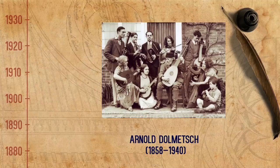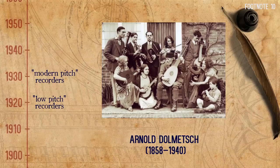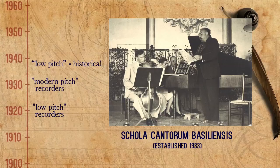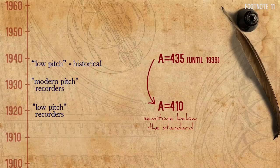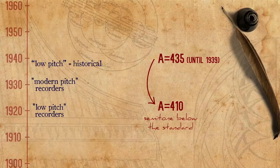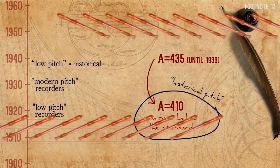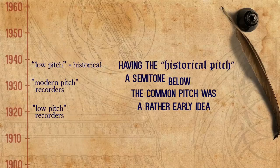Some recorders Dolmetsch made in the 1920s were in low pitch, and only by the 1930s did his son start producing recorders also in modern pitch. Around that time, in the early days of the Schola Cantorum Basiliensis, it was not unusual to use low pitch as a more historical one. This pitch was circa A equals 410 — a semitone below the standard pitch that until 1939 was in this region still 435, and not yet 440. In order to encourage students to play more in the historical pitch, the Schola made an agreement with the music store to sell students low pitch recorders at a discount.